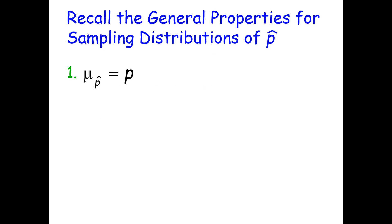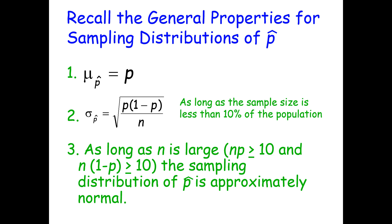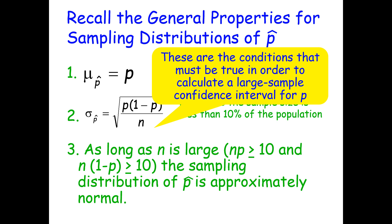Recall the general properties for sampling distributions of p-hat. The mean of the sampling distribution of p-hat equals p. The standard deviation of the sampling distribution of p-hat equals the square root of p times the quantity 1 minus p, all divided by n, as long as the sample size is less than 10% of the population. And third, as long as n is large — meaning n times p is greater than or equal to 10, and n times 1 minus p is greater than or equal to 10 — the sampling distribution of p-hat is approximately normal. These are the conditions that must be true in order to calculate a large sample confidence interval for p.